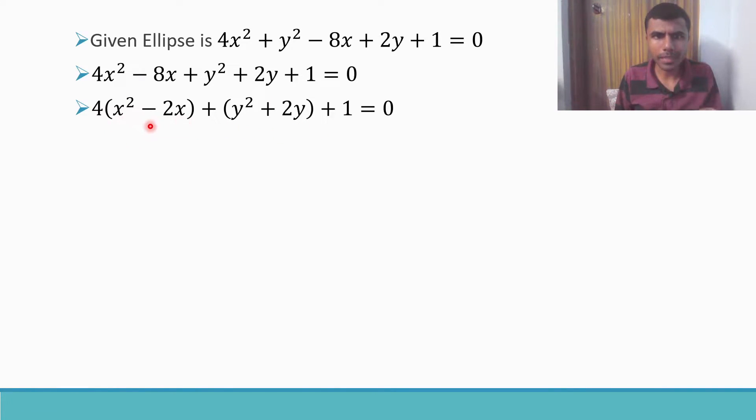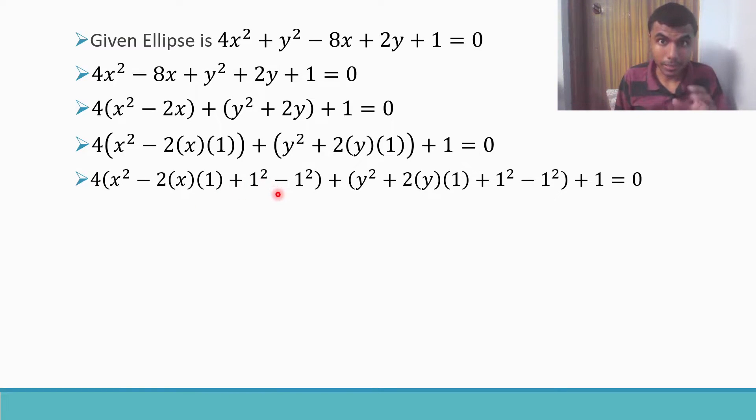Now, I want to make this into some perfect square, some perfect square plus minus something or plus something. Now, how to do that? If you observe, this x² - 2x can be written as x² - 2·x·1. And this 2y I wrote it as 2·y·1. Now, you might ask why I'm doing this. To convert into something like a perfect square, I am using this a² - 2ab + b².